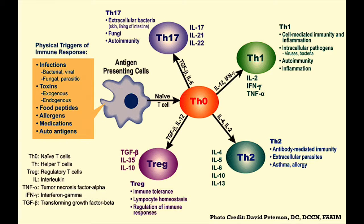Cell-mediated immunity is involved specifically in protection against intracellular pathogens — intracellular bacteria, viruses, and also cancer and tumors. Cell-mediated immunity is mostly associated with T cells, NK cells, and activated phagocytes. Naive T cells are activated in the lymph nodes by dendritic cells or other APCs presenting the cognate antigen. The T cells have to see this antigen presented in the context of MHC in order to respond.